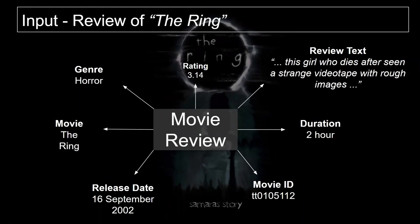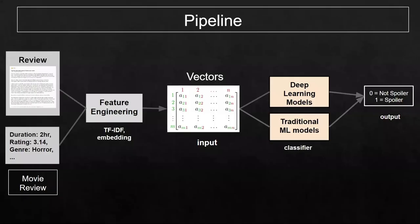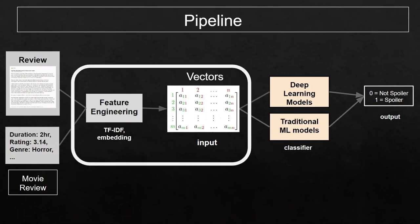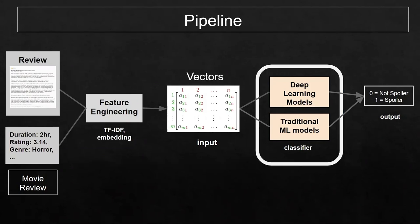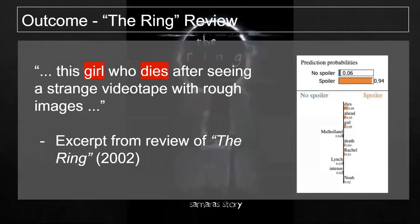Here's one example input instance — a review of the movie The Ring. Since computers cannot understand words, we first process this review by converting its words into numerical vectors. We then feed these vectors into our classifier models, which output a binary classification: spoiler or not spoiler.